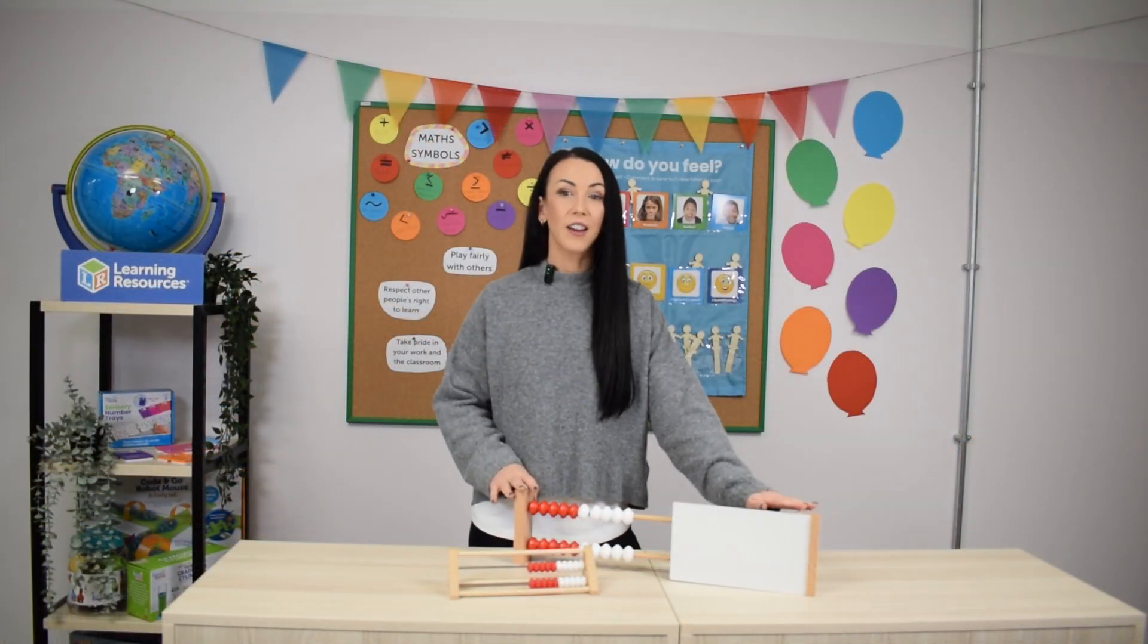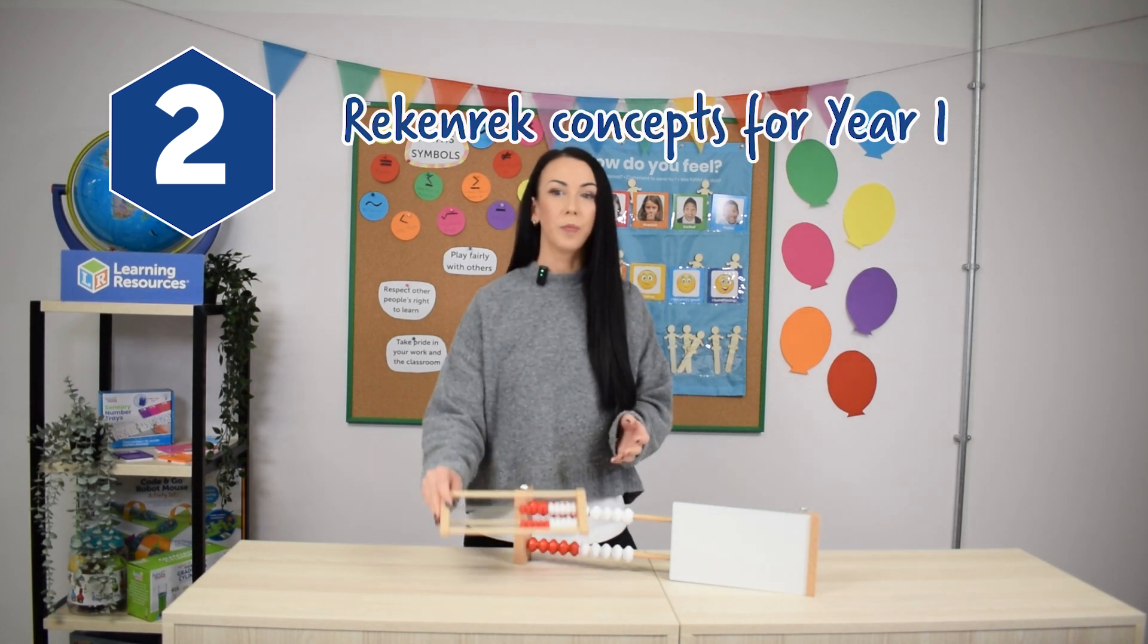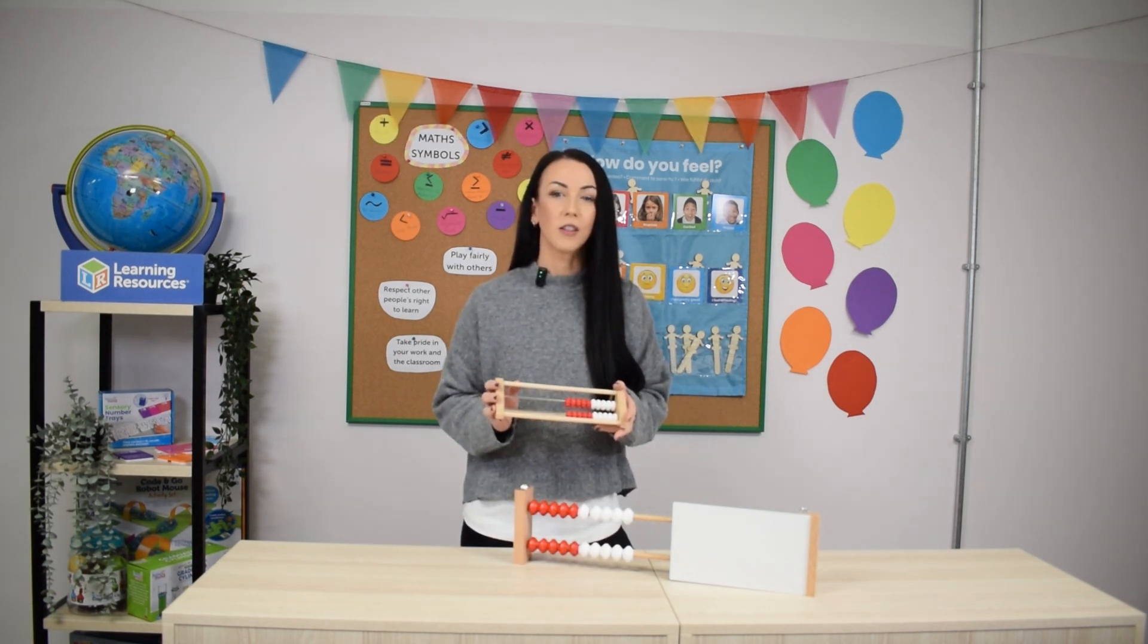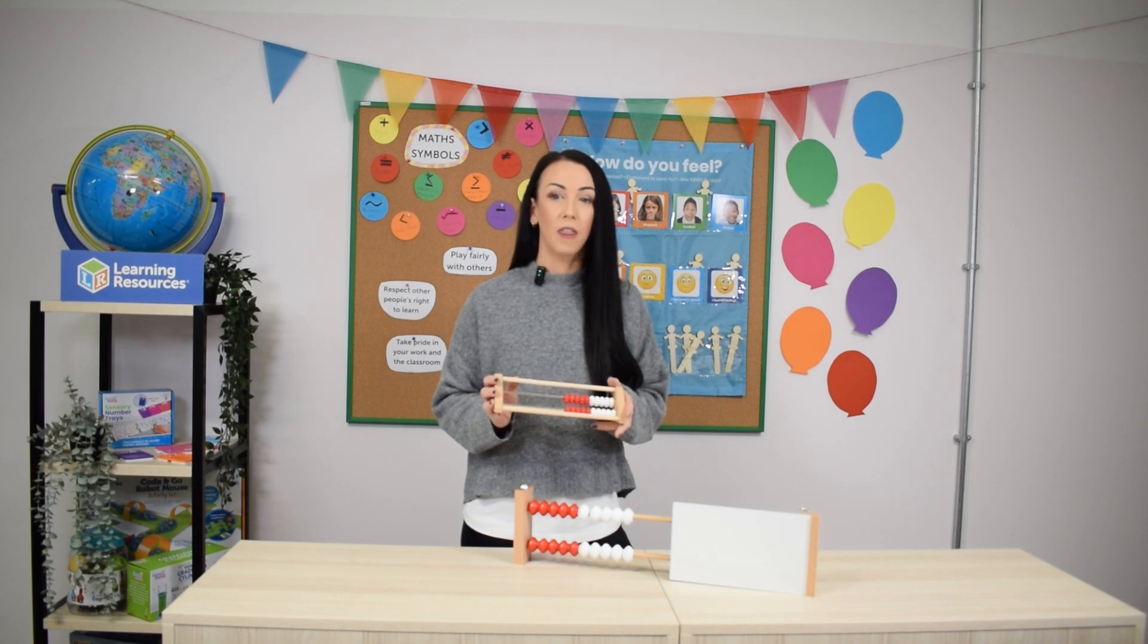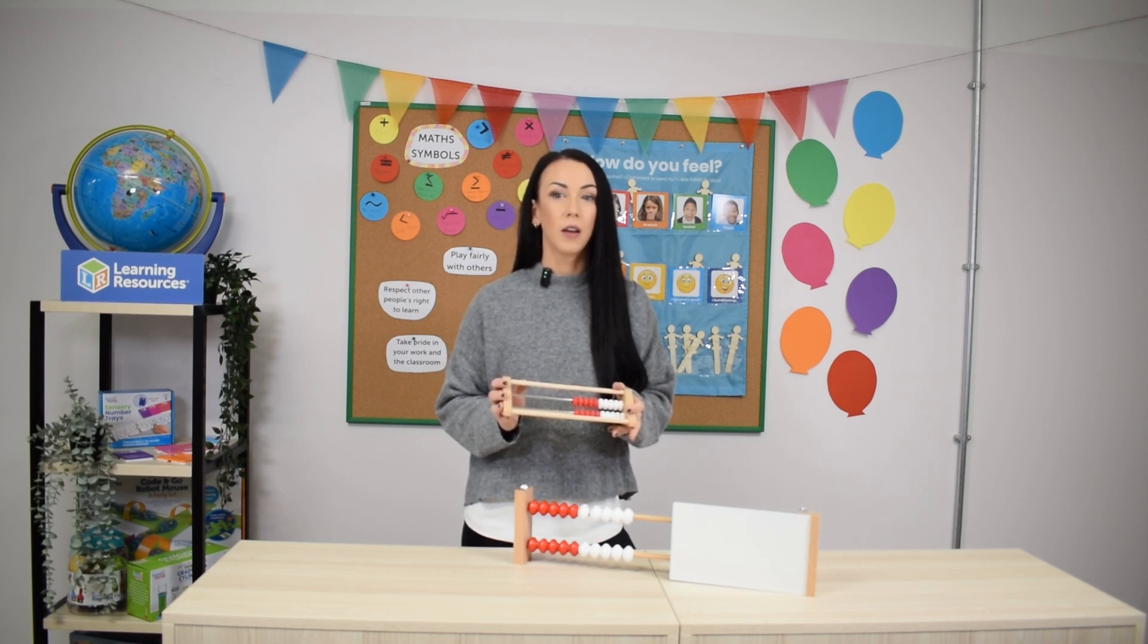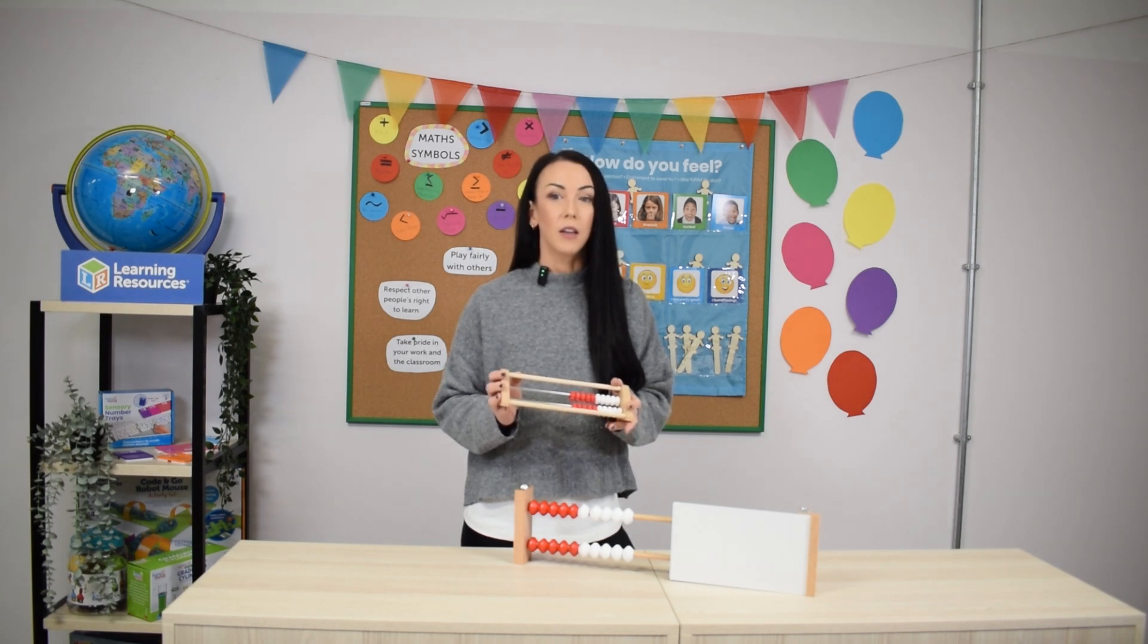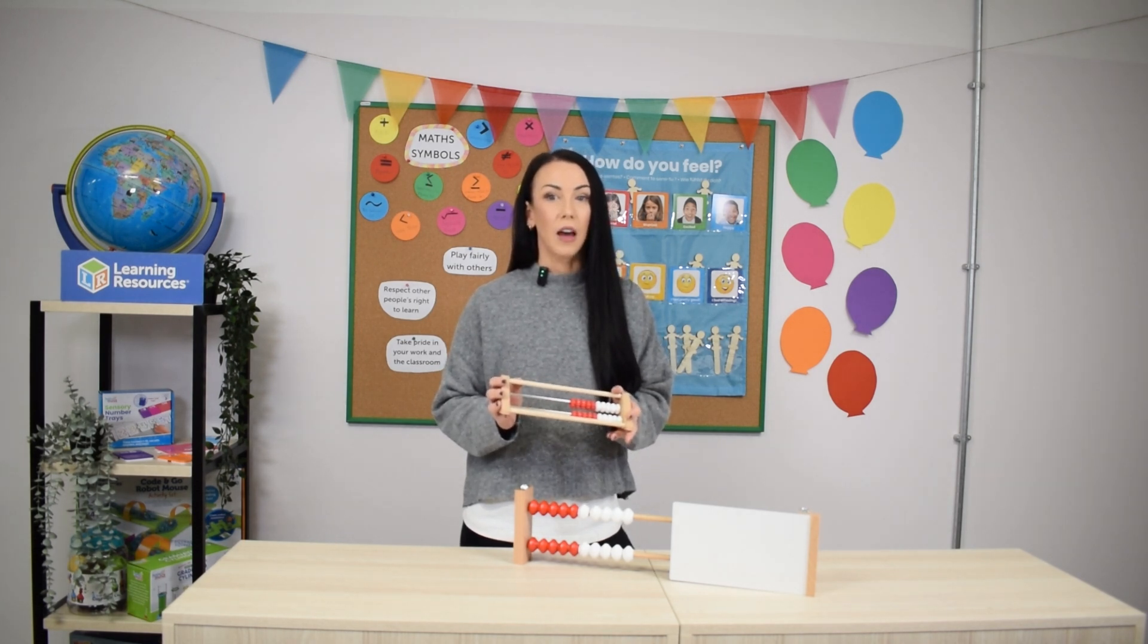Now let's take a look at how we can use the Rekenrek to support concepts in year one. It is the perfect tool for supporting children to look at number bonds to ten then to twenty. Children see the numbers physically which supports their understanding of the part part whole relationship. I would use this alongside the part part whole representation too to really model that language.